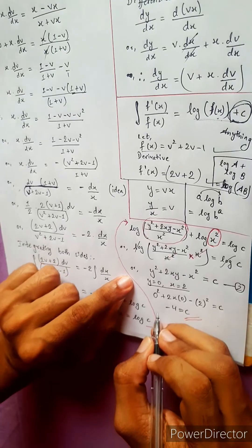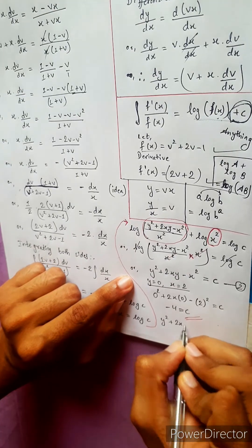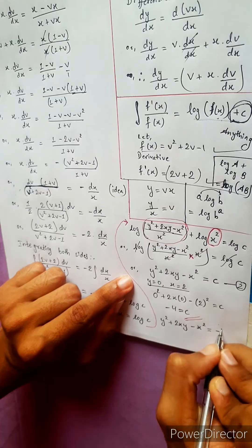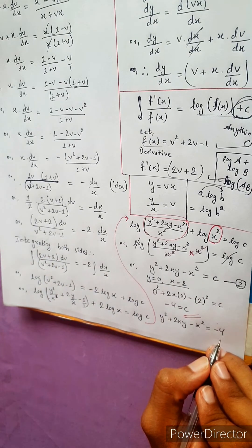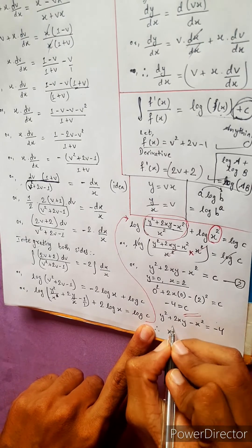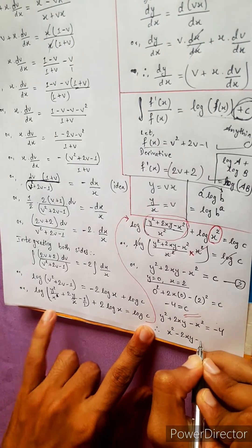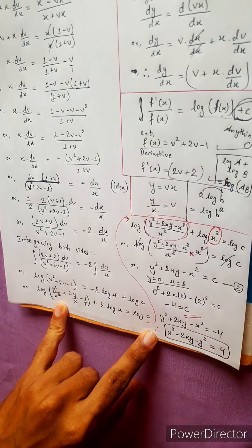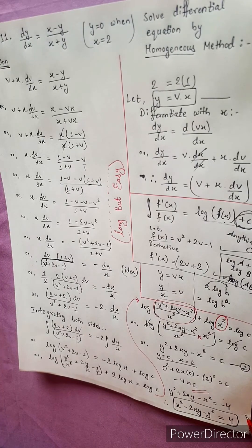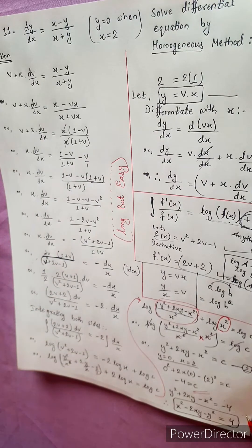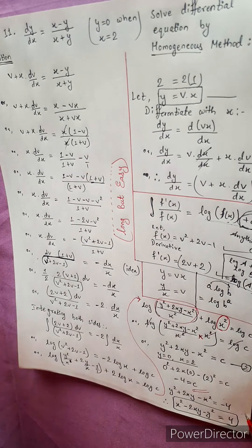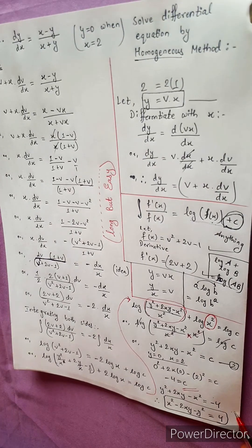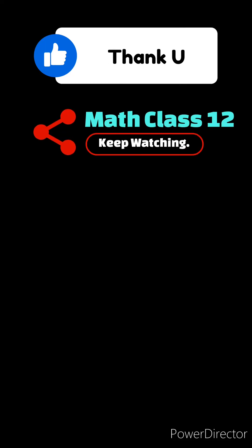Therefore the answer is y² plus 2xy minus x² equals minus 4, or equivalently x² minus 2xy minus y² equals 4. That is the final answer. Bye bye and thank you, see you next time.